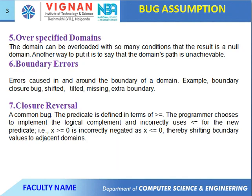Next, over-specified domain. The domain can overlap with so many conditions that the result is a null domain — this is called the over-specified domain. Another way to put it: the domain boundaries path is unreachable. That is also called the over-specified domain.